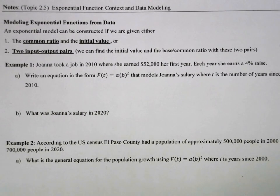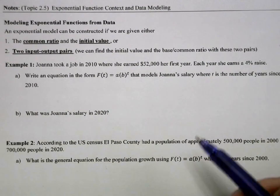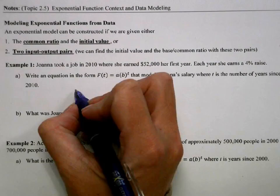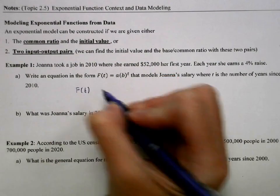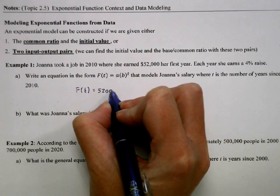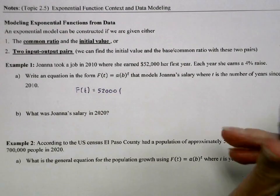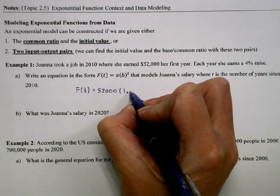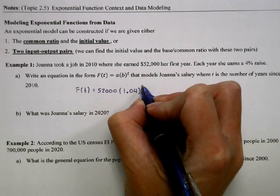Let's look at our first example. Joanna took a job in 2010 where she earned $52,000 her first year. Each year she earns a 4% raise. We're going to write an equation in the form P(t) = ab^t, since we're talking about time, that models Joanna's salary where t is the number of years since 2010. In this case, we were given the initial amount, which was $52,000, and our base is 1.04 for my 4% raise to show exponential growth.